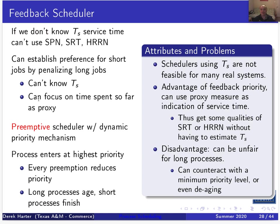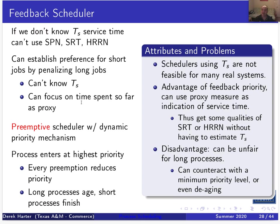In the feedback scheduler we don't use explicit priorities — we have an implied priority by keeping processes on different queues. The way we calculate the priority — or the age of a process — is a proxy method to estimate whether a process is a long or short process. We can't know ahead of time what the next burst time will be, but we can estimate it without explicitly calculating exponential averages by tracking how long a process has been executing.